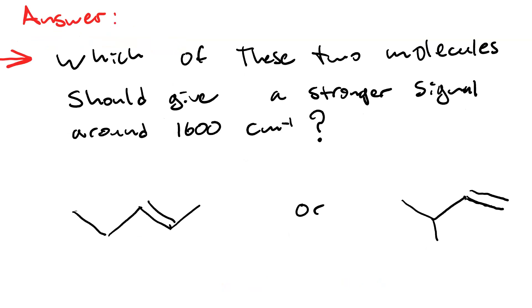Here's my answer. First of all, what kind of bond are we looking at around 1600 wavenumbers? That's a C=C double bond. So then signal strength is proportional to the change in dipole moment. In other words, the lack of symmetry around that double bond.